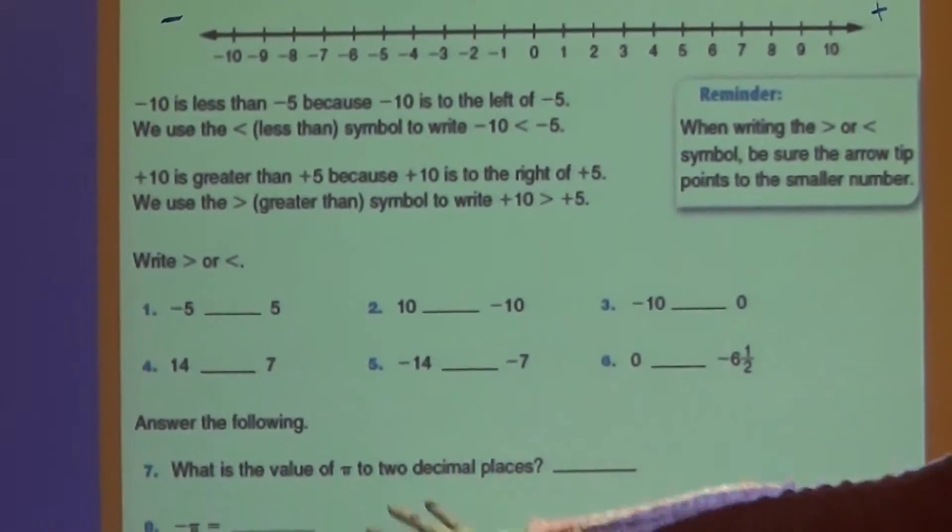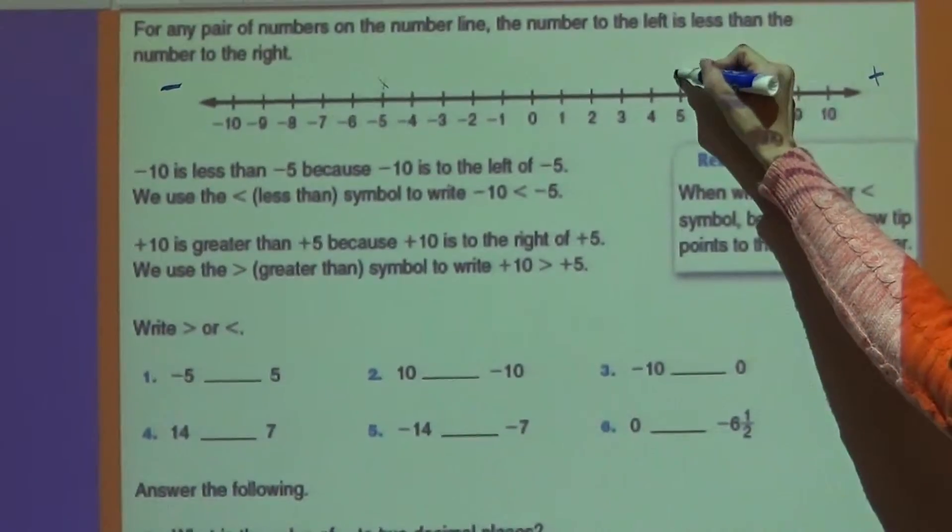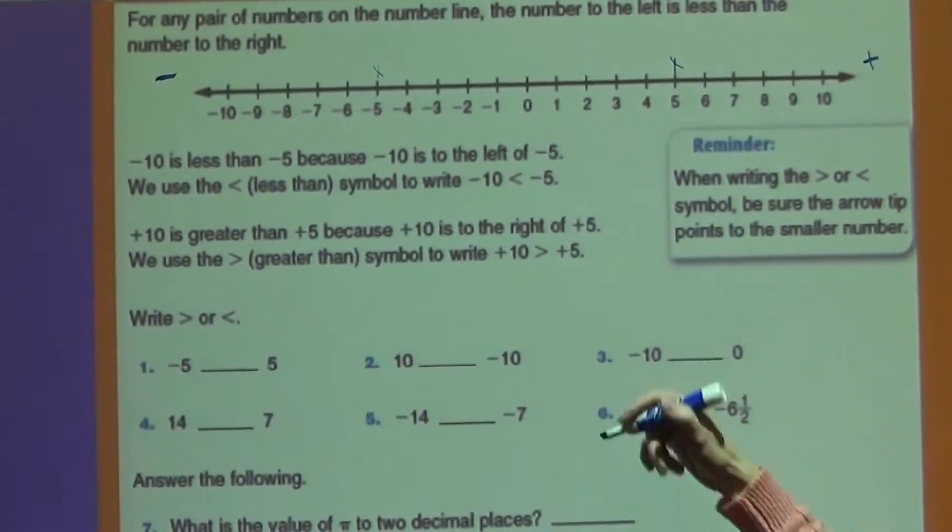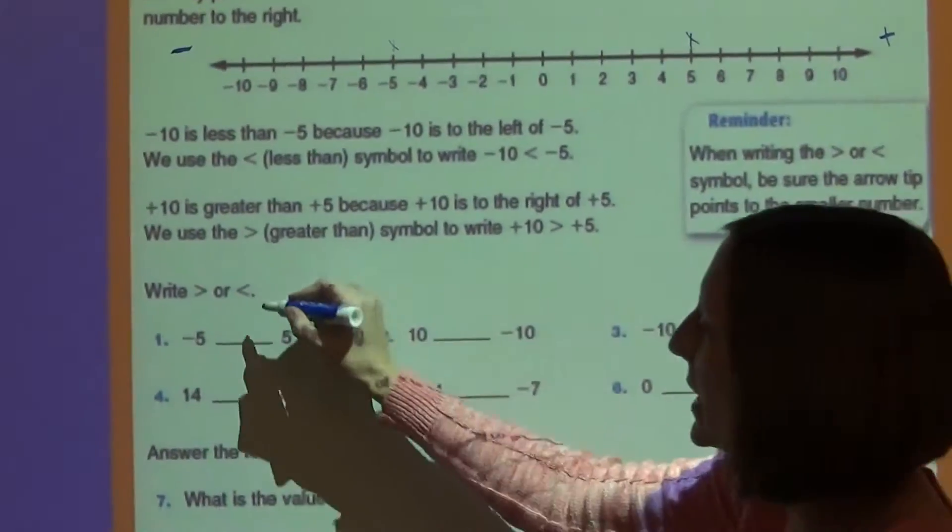So if I were to compare negative 5, which is right here, to positive 5. And any time you don't see that symbol in front of it, we know that it's a positive number. I can tell that positive 5 is larger because it's towards the greater end of the number line.